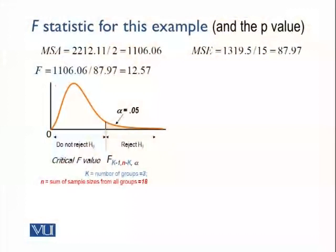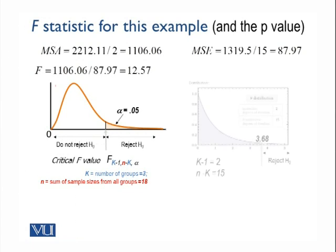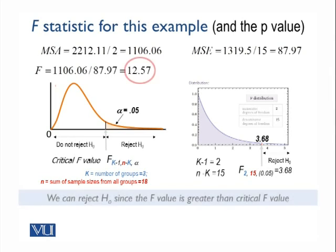The F-statistic is calculated as the ratio of MSA and MSE — the mean square due to treatment divided by the mean square due to error. In this example, that ratio comes out to be 12.57. To determine if this is high or low, we need the critical F-value. The degrees of freedom are 2 and 15 respectively. With an alpha of 0.05, the critical value is 3.68, which is much less than 12.57. Our test statistic exceeds the critical value, so we can reject the null hypothesis.